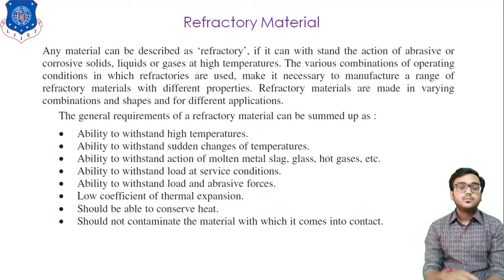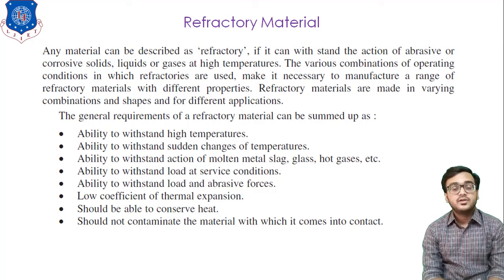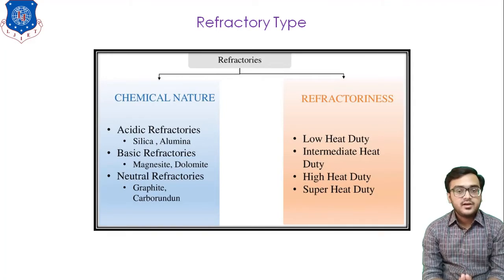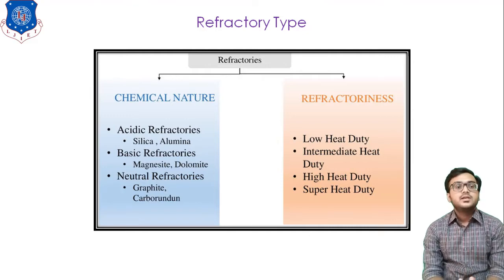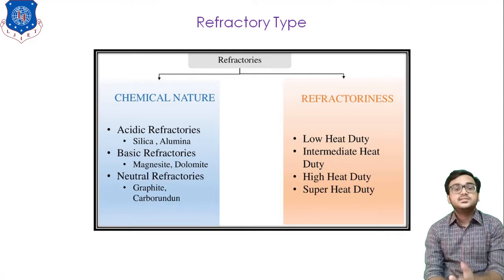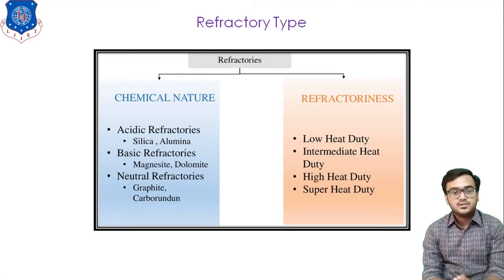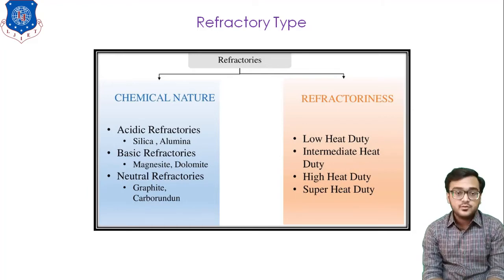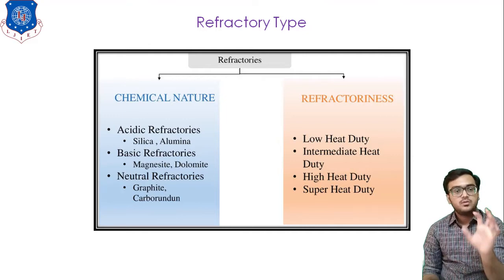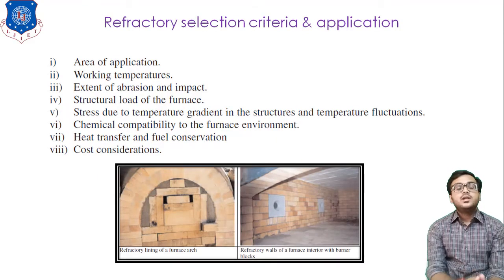Refractory materials are a subject of material science, but in Energy Conservation and Management we discuss only those aspects related to thermal science. There are two types of classification: by chemical nature and by refractoriness. Chemical refractory is further classified into three types: acidic refractory, basic refractory, and neutral refractory — based on the pH value. The second classification by refractoriness has categories: low heat duty, intermediate heat duty, high heat duty, and super heat duty materials.